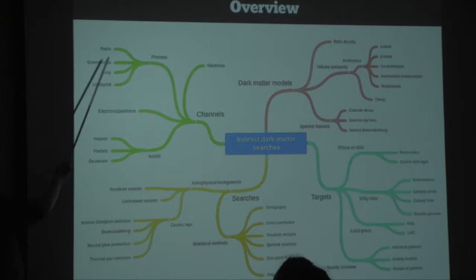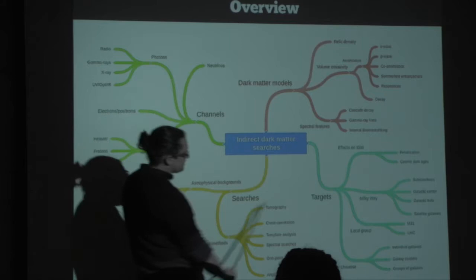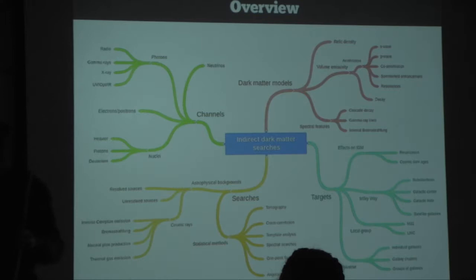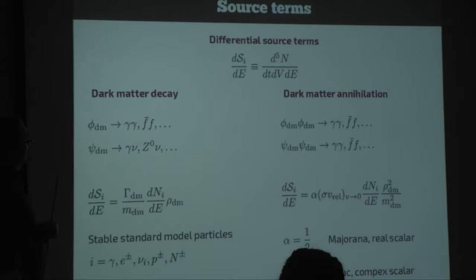I can only cover a small part of this. What I will mostly focus on — because this is also pretty much the focus of my research — will be photon signals. I will talk about anti-matter searches because it's related: the mechanisms relevant for understanding anti-matter signals and backgrounds are also relevant to understanding backgrounds in gamma-ray searches for dark matter. Among the targets, I will mostly focus on the Milky Way, maybe the local group, and only talk a bit about actual models for dark matter.